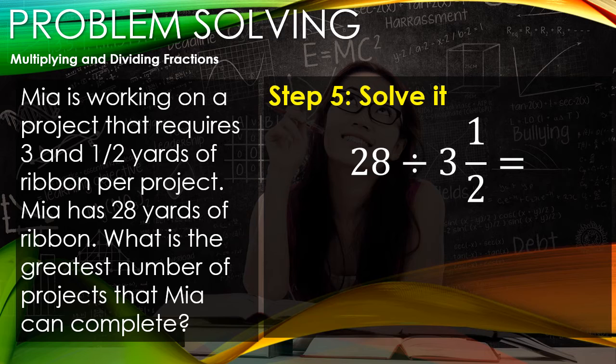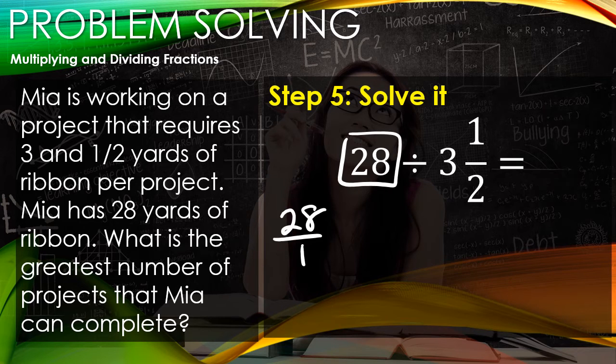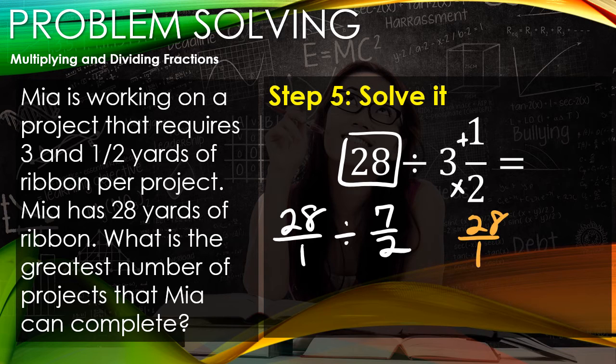Our first step is to make everything into improper fractions. 28 as an improper fraction is 28/1, and we divide that by - 2 times 3 is 6, plus 1 is 7 - so 7/2. Now we keep our first fraction, flip the second fraction, and multiply.